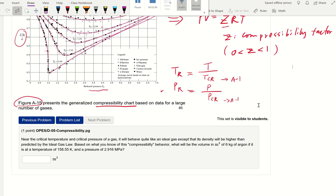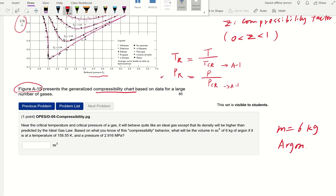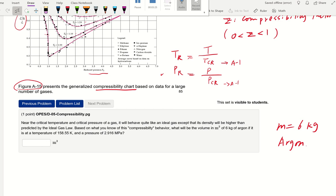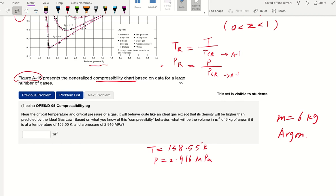Now let's take a look at one example. So near the critical temperature and the critical pressure of a gas, it will behave like ideal gas, except that this density can be a little bit higher than the ideal gas. So in that situation, based on what you know, compressibility behavior, what would be the volume of six kilogram? So mass here is six kilogram. And it's argon. And they said it's kind of like ideal gas, but not. So we're going to definitely consider the compressibility factor. And the temperature here is given as 158.55 Kelvin. That's already in absolute temperature. And the pressure is 2.916 megapascal.